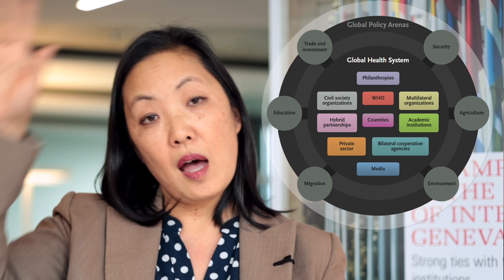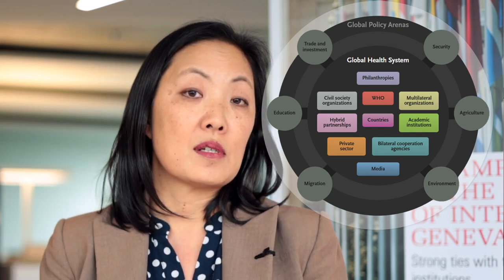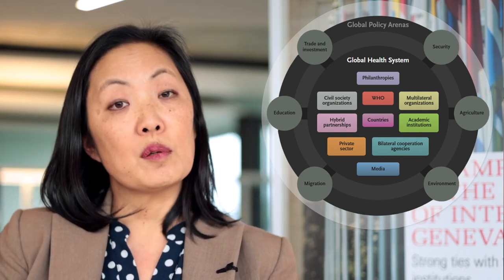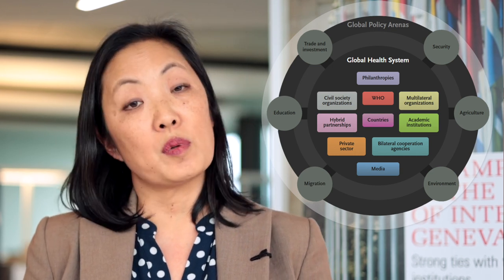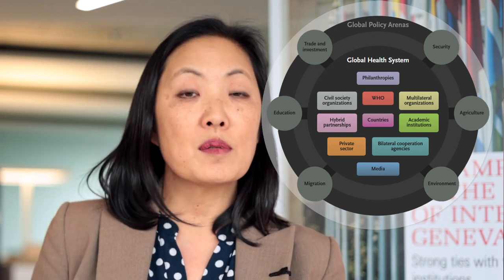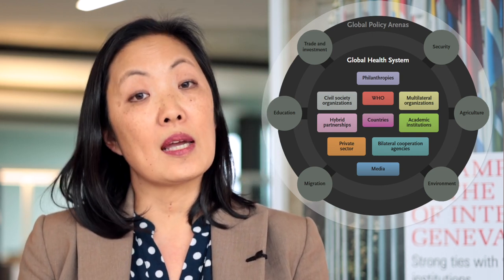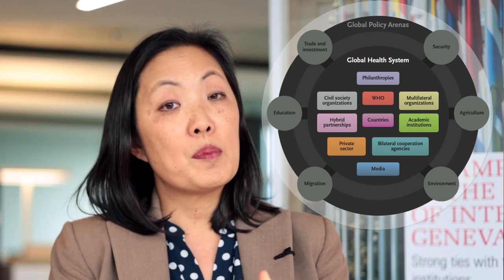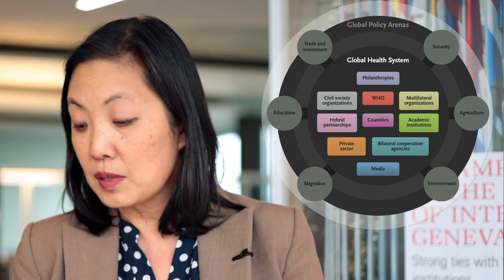Starting at the top and going clockwise, we have philanthropies or foundations such as the Rockefeller or Gates Foundation. We have multilateral organizations such as the World Bank, UN agencies, or the World Trade Organization. We have academic institutions like the Graduate Institute, where research is carried out and training and capacity building of students is done. We have bilateral cooperation organizations such as the United States Agency for International Development.